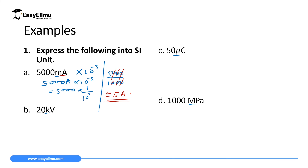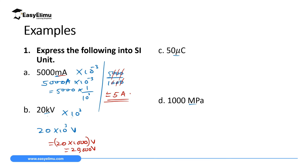Second: 20 kV. Kilo means times 10 to the power 3. So 20 kV equals 20 times 10 to the power 3 volts, which is 20 times 1000 volts, giving us 20,000 volts.